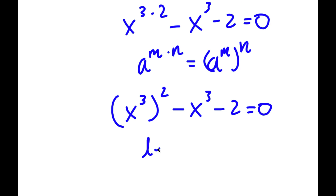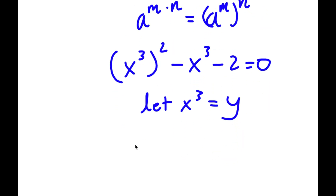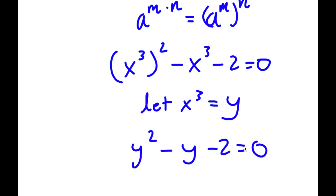Now I'm going to let x to the power of 3 equal to the variable y. So now I have y squared minus y minus 2 is equal to 0.